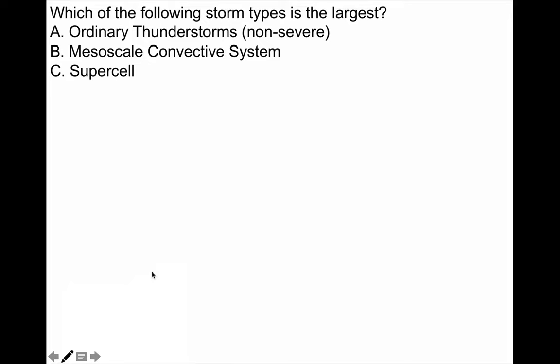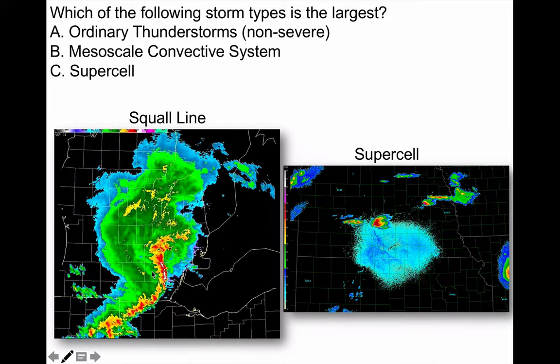My question for you is: which of the following storm types is the largest? Is it ordinary thunderstorms, mesoscale convective systems, or supercells? Well, you might be tempted to think that supercells are the largest, but they are not. Supercells are actually quite small thunderstorms. The biggest is the squall line, or the mesoscale convective system.